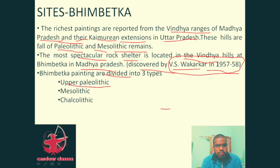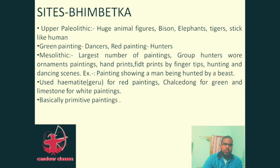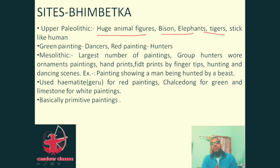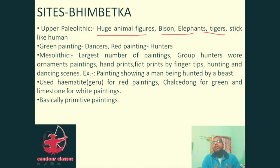Bhimbetka paintings are divided into three types: upper Paleolithic, Mesolithic, and Chalcolithic. In the upper Paleolithic period, you can find huge human and animal figures — bisons, elephants, tigers, and stick-like human figures. Green paintings are associated with dancers, indicating knowledge of color symbolism at that time.